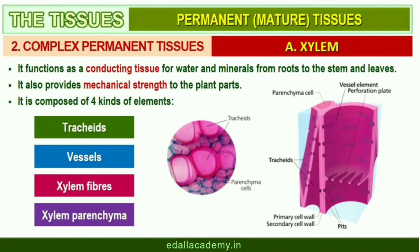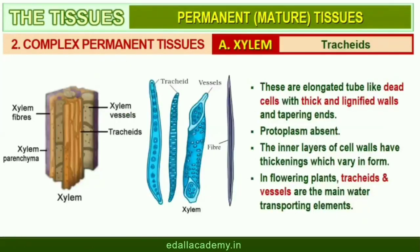Xylem is composed of four different kinds of elements: tracheids, vessels, xylem fibers, and xylem parenchyma. Gymnosperms lack vessels in their xylem. Tracheids are elongated or tube-like cells with thick and lignified walls and tapering ends. These are dead and without protoplasm. The inner layers of the cell walls have thickenings which vary in form. In flowering plants, tracheids and vessels are the main water-transporting elements.